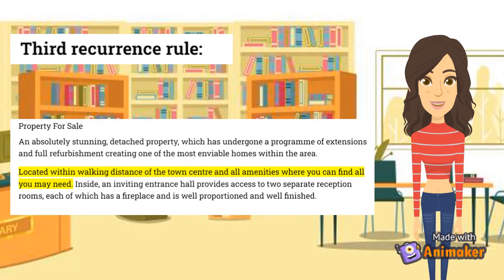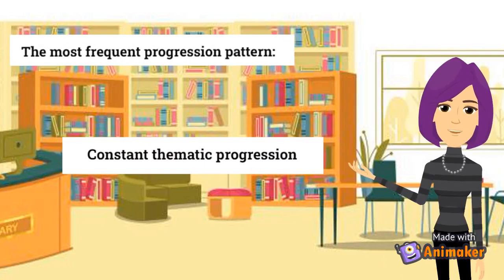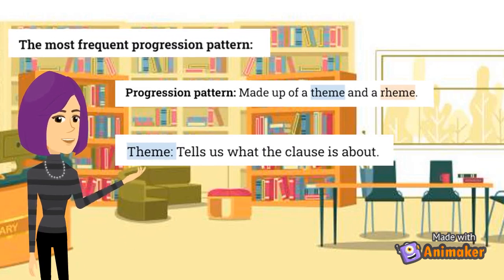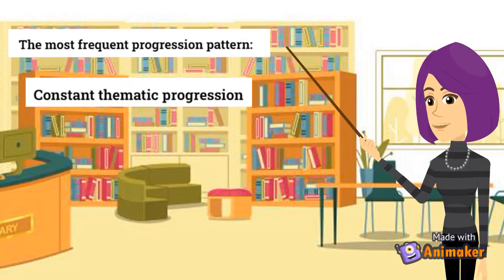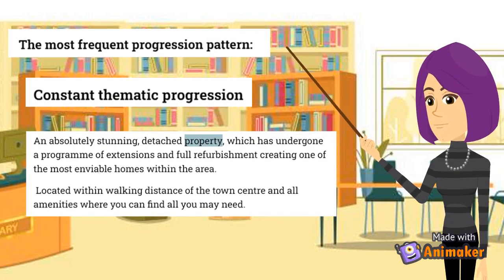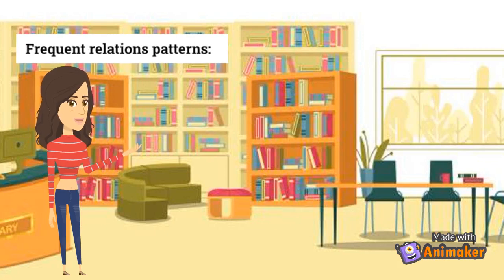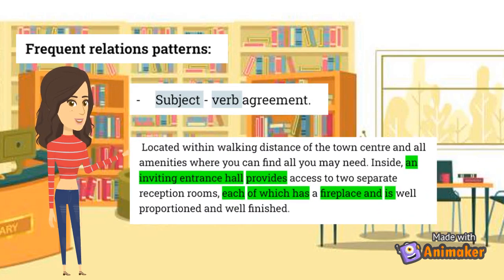Different progression patterns can be observed, but the most frequent one is the constant thematic progression. A progression pattern is made up of the theme, which tells us what the clause is about, and the rheme, which is the remaining part of the clause and provides new information about the theme. The sentences of the paragraphs have the same theme in common, and the rhemes give different descriptions of it. In this case, the theme of the first sentence — "property" — becomes the theme of the clauses that follow. The first relation pattern that can be identified is subject-verb agreement: for example, "an inviting entrance hall" refers to a singular subject, so the verb "provides" must also be in singular form.